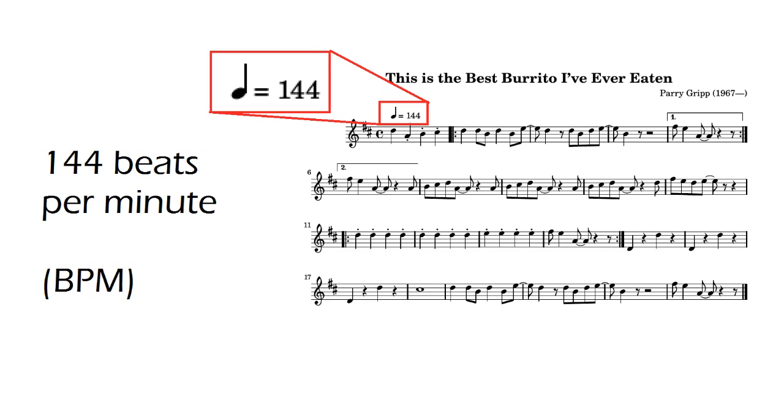The duration of the notes, and therefore the speed of the musical composition, is defined through a parameter called beats per minute, or BPM, which establishes the number of beats that will fit in one minute.